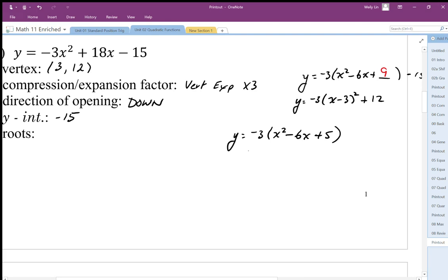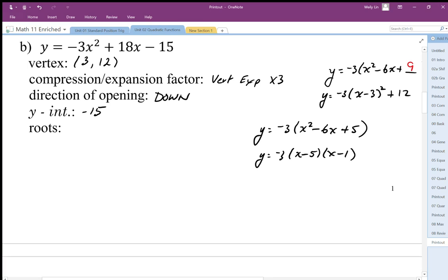So we get -3(x - 5)(x - 1). The roots of this function are going to be at (5, 0) and it's going to be (1, 0). So those are my roots.